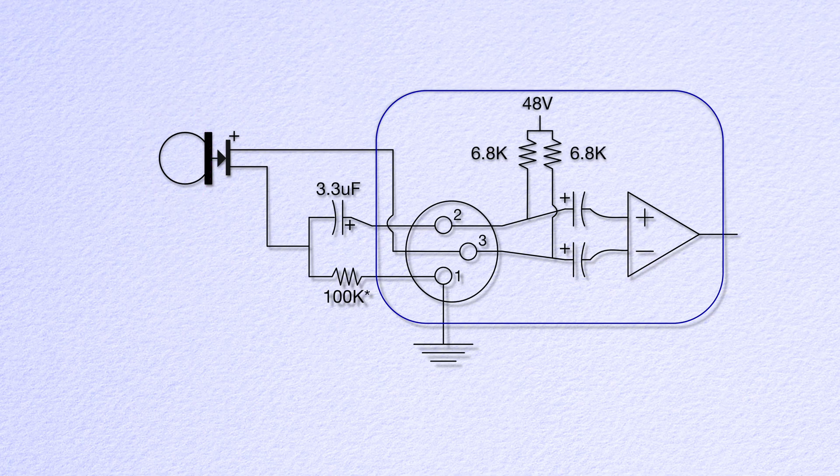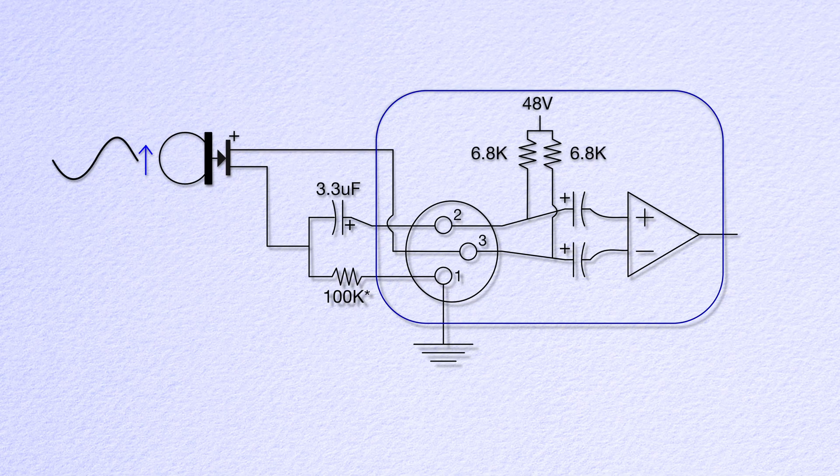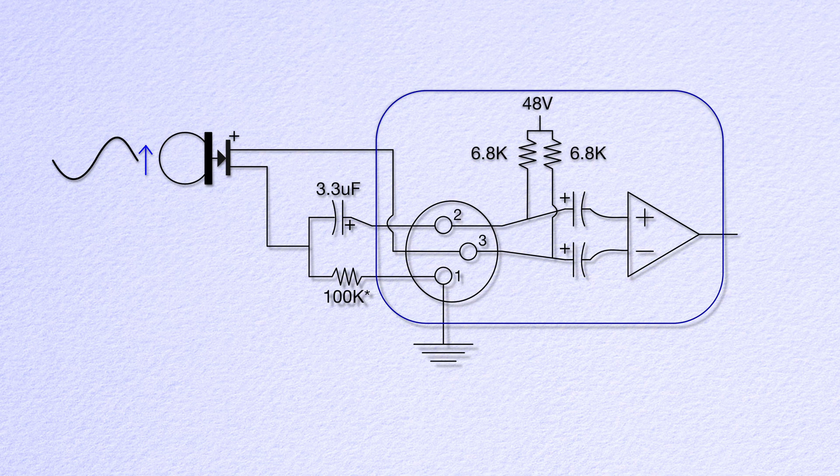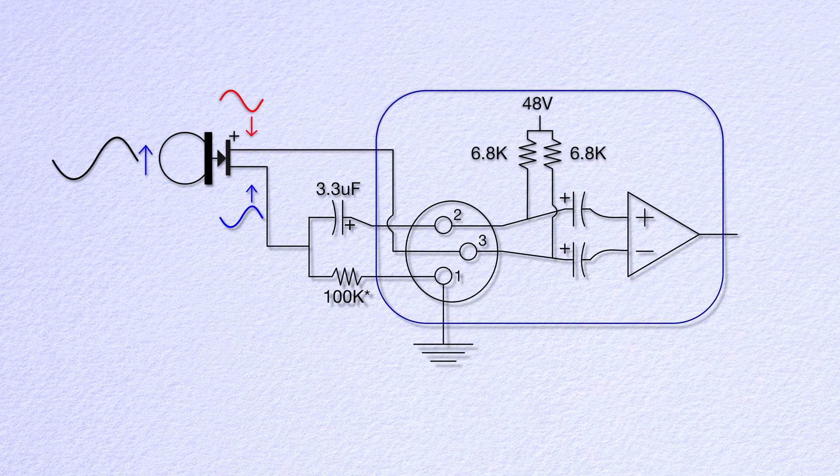The incoming sound causes a positive pressure to be applied to the internal diaphragm of the capsule, which will move closer to its back plate. This causes the internal voltage on the capsule to go up and the FET to conduct more. As it conducts more, the voltage across the FET goes down. The end result is an increase in voltage on pin two and a decrease in voltage on pin three. This is exactly what you want your microphone preamp to see.